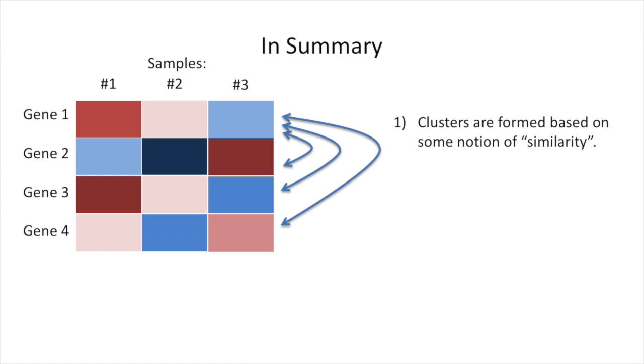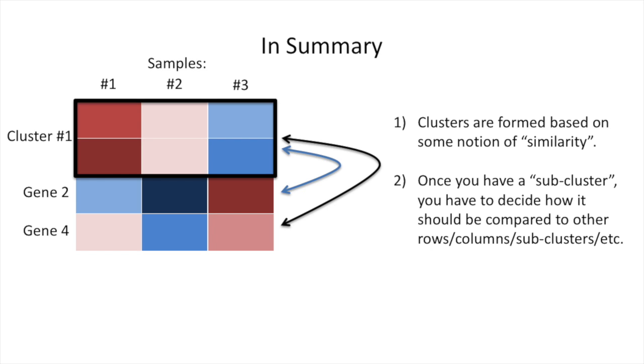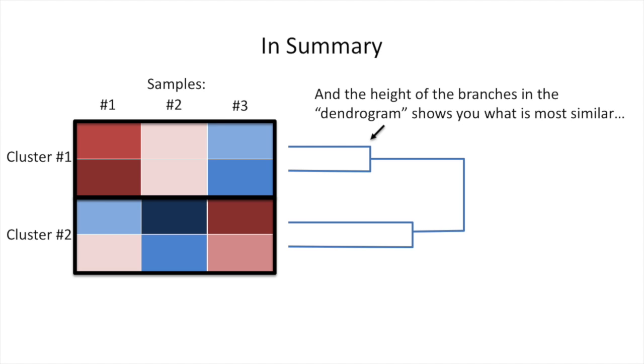In summary, clusters are formed based on some notion of similarity — you have to decide what that is, but most programs have reasonable defaults. Once you have a sub-cluster, you have to decide how it should be compared to other rows, columns, or sub-clusters, and most programs have good default settings for this as well. The height of the branches in the dendrogram shows you what is most similar. We've made it to the end of another exciting StatQuest. If you liked this presentation, please subscribe to my channel. Also, if you'd like me to do something specific, feel free to mention it in the comments below.